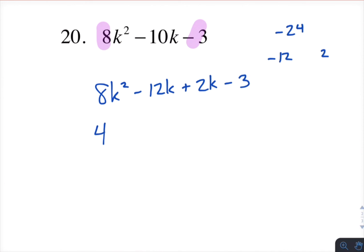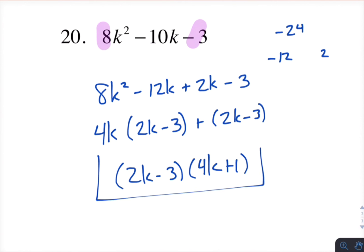So if I take a 4k out of here, I'm left with 2k minus 3. And then 2k minus 3. So the 2k minus 3 is in common. 4k plus 1. There you have it.